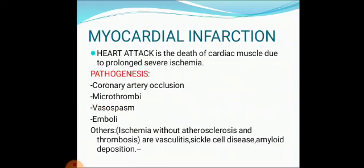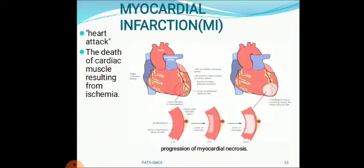Myocardial infarction is death of cardiac muscle due to prolonged severe ischemia. The pathogenesis of myocardial infarction includes coronary artery occlusion at any level, formation of microthrombi, vasospasm, and formation of emboli. Ischemia without atherosclerosis and thrombosis may result from vasculitis, sickle cell disease, or amyloid deposition of the heart. The picture shows progression of myocardial ischemia — occlusion at the left anterior descending artery first affects the endocardium, then the zone of necrosis increases to affect the full thickness of the wall.